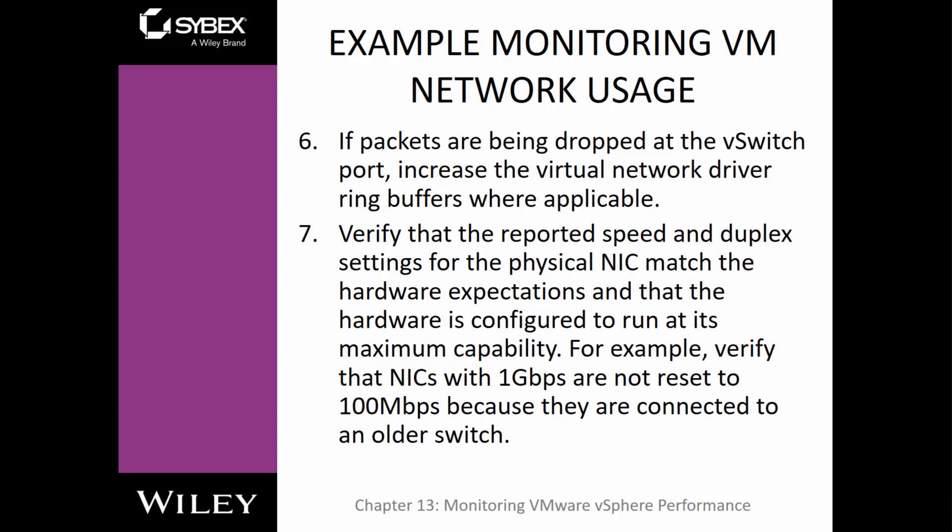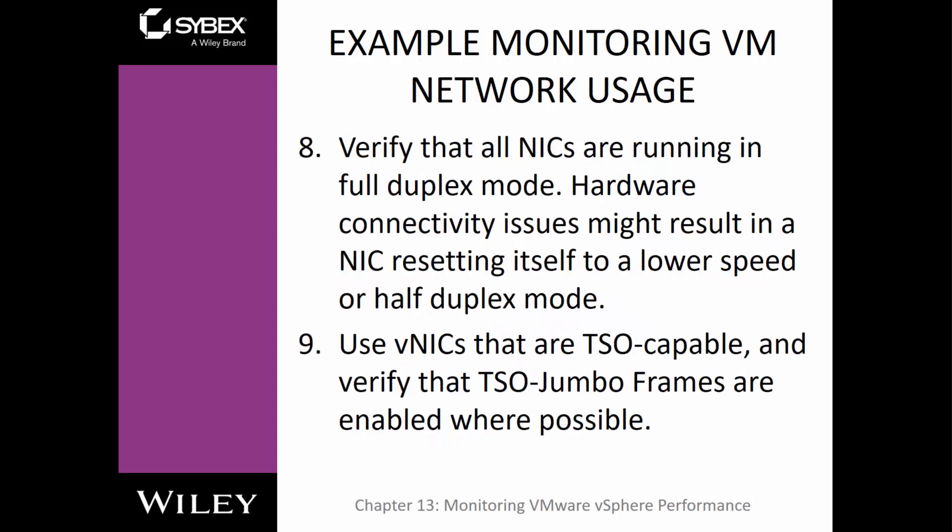If packets are being dropped at the virtual switch port, maybe increase the virtual network driver ring buffer. Verify the reported speed and duplex — maybe you accidentally set everything to half duplex; it doesn't hurt to check. Make sure everything is running in full duplex mode. Use virtual vNICs that are TSO capable and verify that TSO jumbo frames are enabled. Make sure you're using the correct MTU size for your frames — maybe your physical switches are sending jumbo frames but your NIC is only capable of a traditional 1500 MTU.